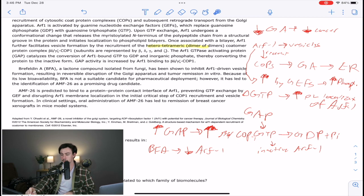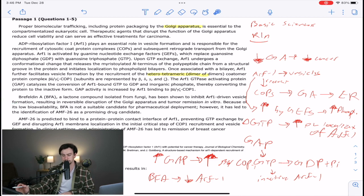So this paragraph says BFA shown to inhibit ARF1 activity resulting in reversible disruption of the Golgi apparatus and tumor remission in vitro. So that's kind of pulling it full circle to when we were talking about the Golgi apparatus earlier.